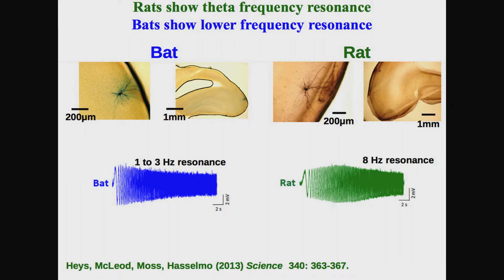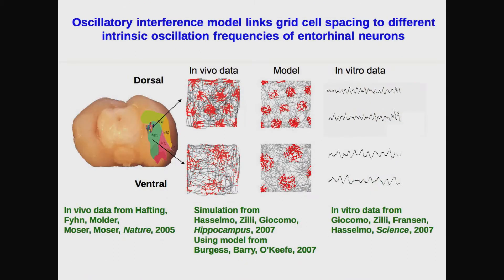In response to that, we've recently looked at some of the cellular properties of neurons in the bat to see if they have oscillatory dynamics. We'd shown in the rat that grid cells at different anatomical positions in the entorhinal cortex have different spacing between firing fields — cells with narrow spacing have a higher frequency oscillation, and ones with larger spacing have a lower frequency oscillation. So we looked for these same cellular oscillations in the bat.